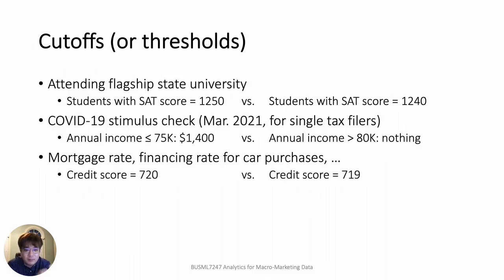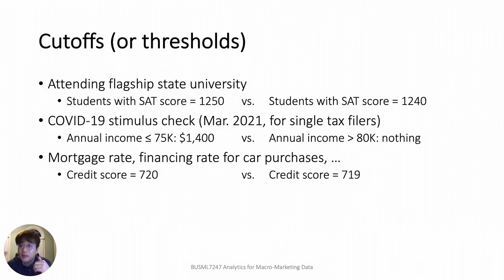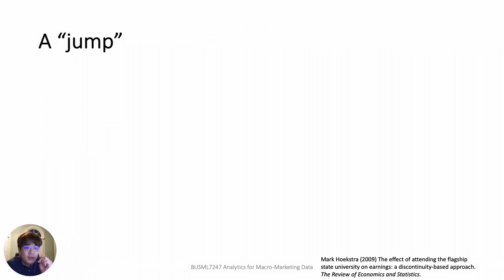Regression discontinuity methods exploit the score-based structure to infer the causal effect of a policy. If a policy has an impact on an outcome, then the score should distinguish between policy recipients and non-recipients in terms of the outcome. That is, there will be a notable discrepancy or discontinuity in the outcome between those who are right above the cutoff and right below the cutoff. This discontinuity is sometimes referred to as a jump.